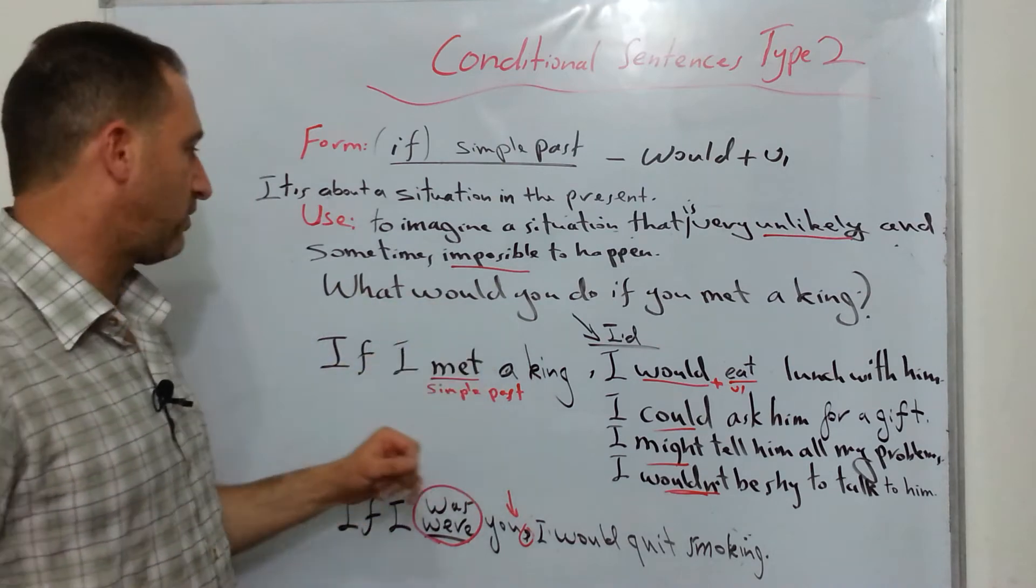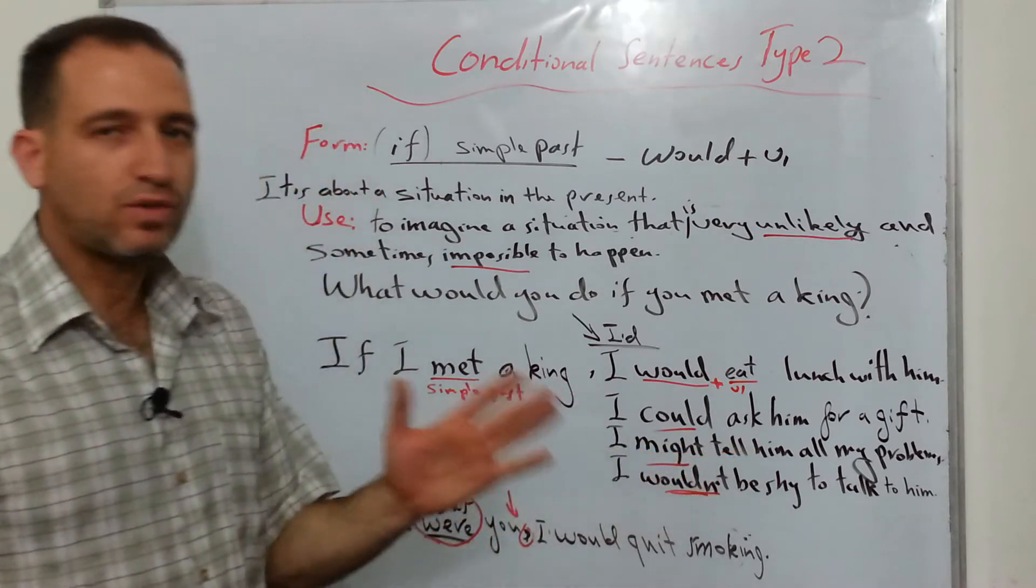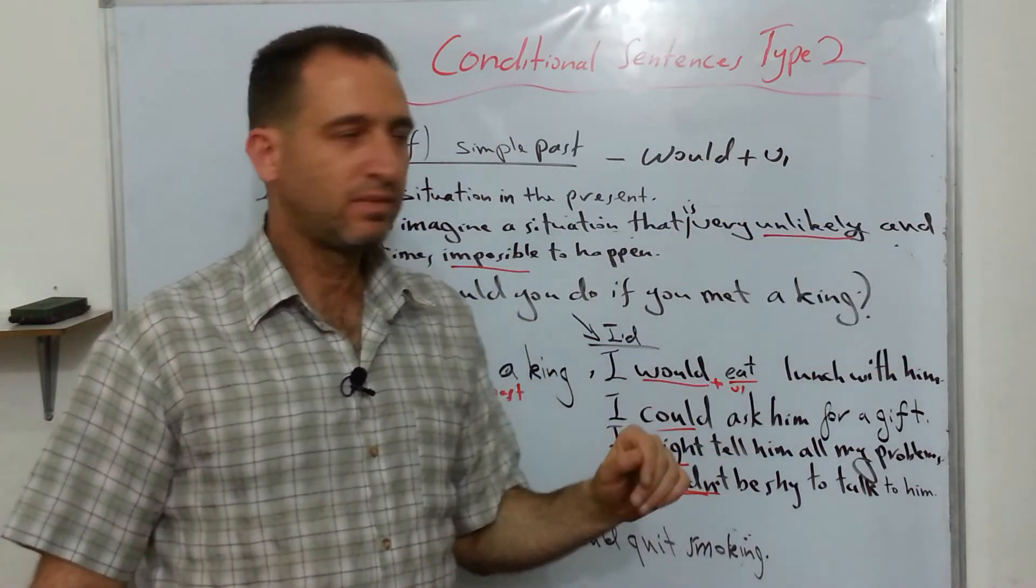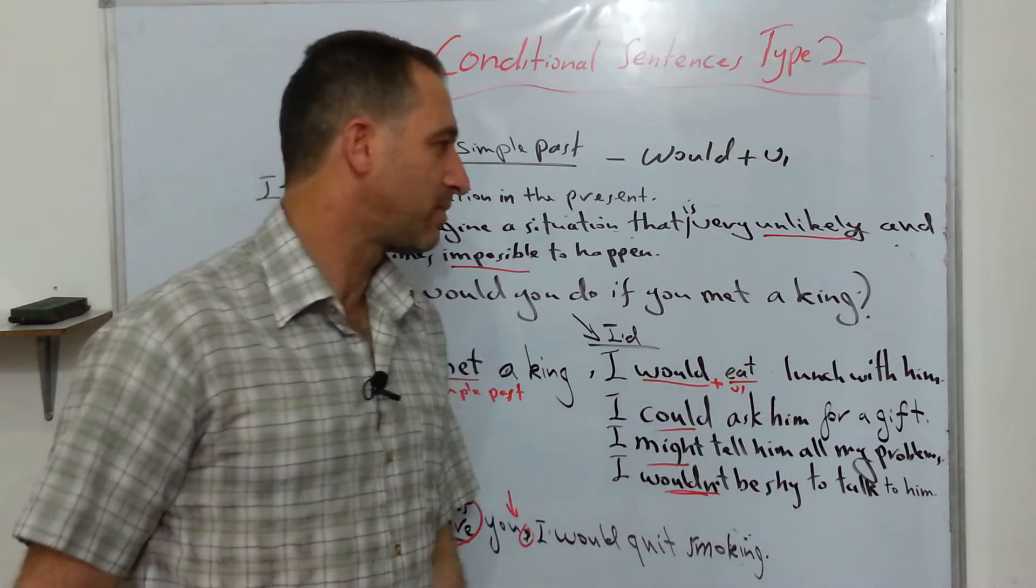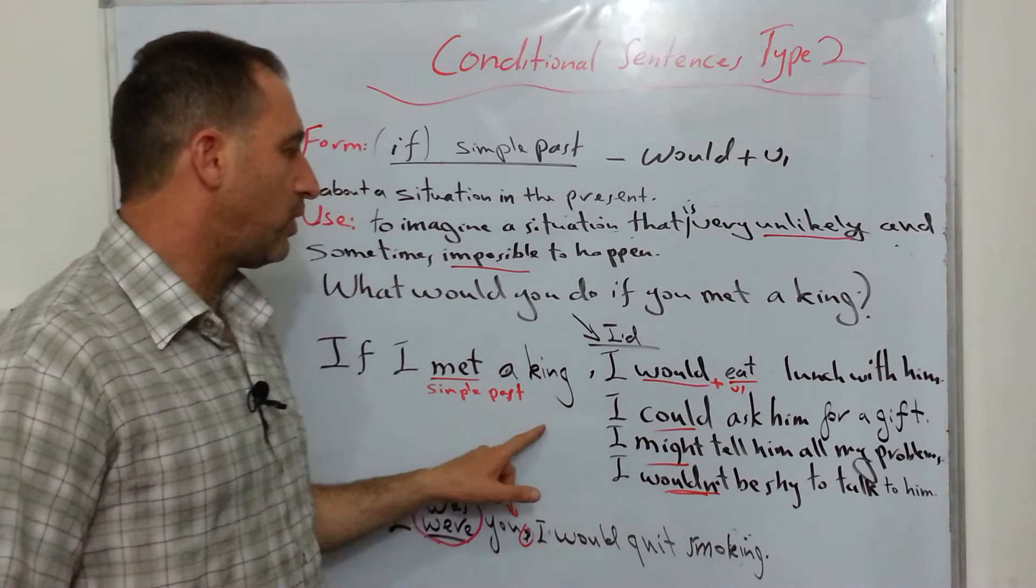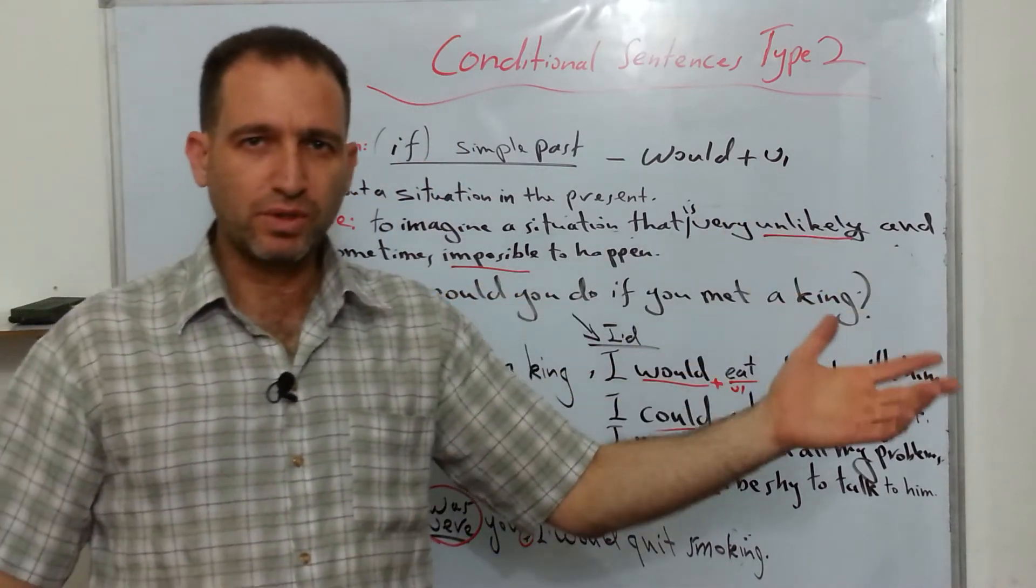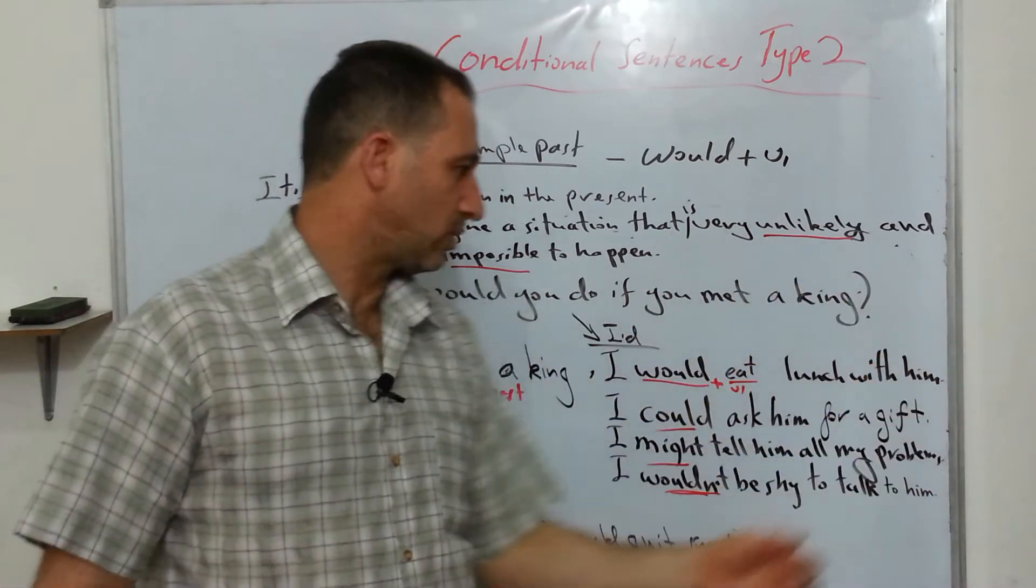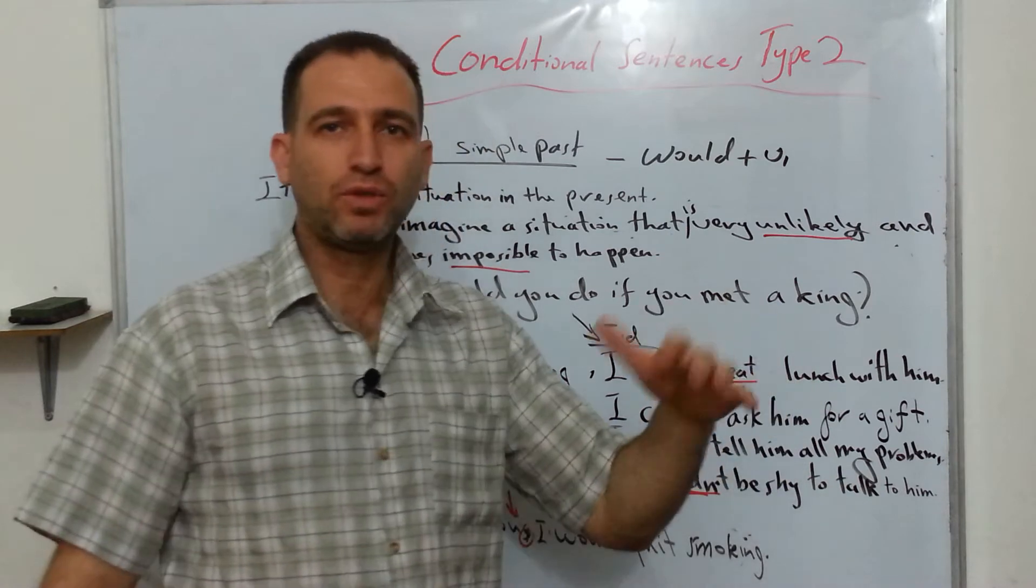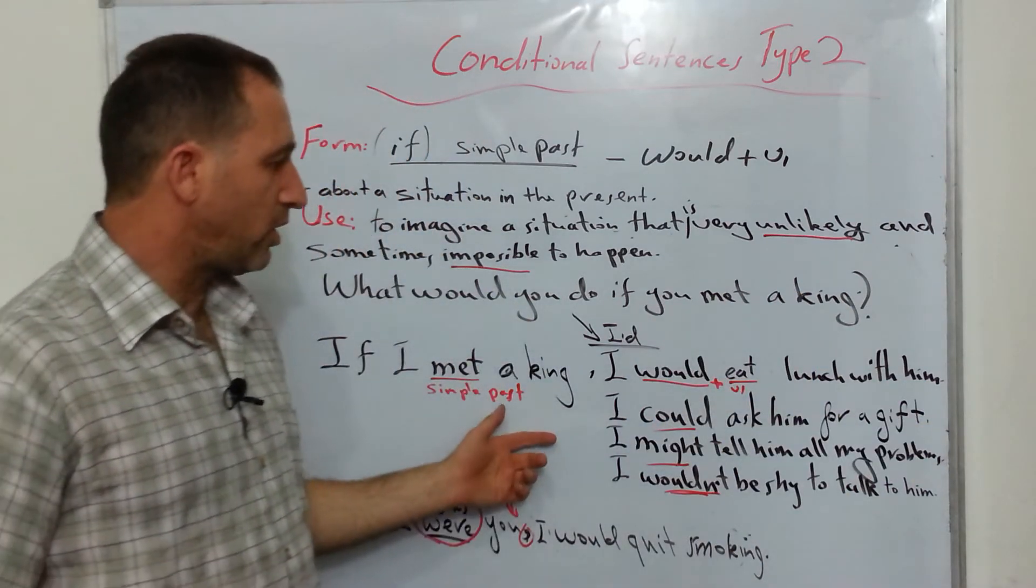And lots of answers I have got for you here. If I met a king, I would eat lunch with him. And this way, it's like I'm sure I can see it, I'm sure about it, even though it's not gonna happen. Or I can use could. And when you say could, it's something like I would be able to, I would be able to ask him for a gift. I could ask him for a gift.